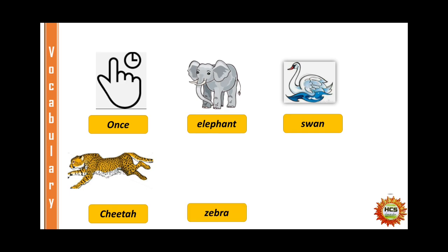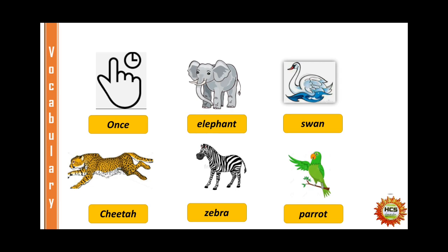Next word is 'zebra.' This is a zebra — it is black and white in color. Next word is 'parrot.' This is a parrot. A parrot is green in color, spelled P-A-R-R-O-T. Next word is 'flew.' Flew is the past tense of fly — fly, flew, flown. For example: the bird flew in the sky.